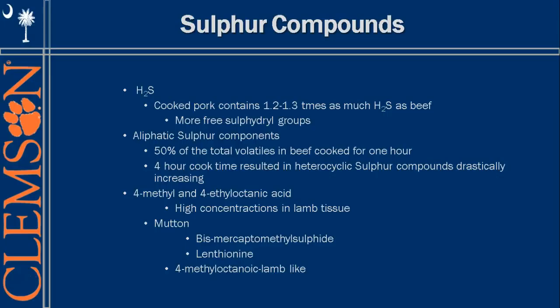When you cook beef for a total of four hours, you see a lot more heterocyclic sulfur compounds increasing, meaning more ring formation, which causes a more intense odor. Four-methyl and four-ethyloctanoic acids have high concentrations in adipose tissue and account for much of our lamb flavor. In mutton, it's the caprilmethyl sulfide and methionine that really drive the mutton flavor, whereas methyl octanoic acid is more prevalent in younger lambs and less so in mutton.